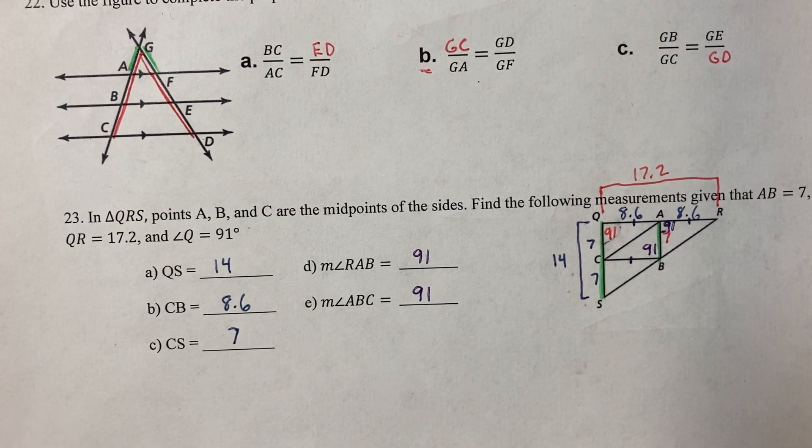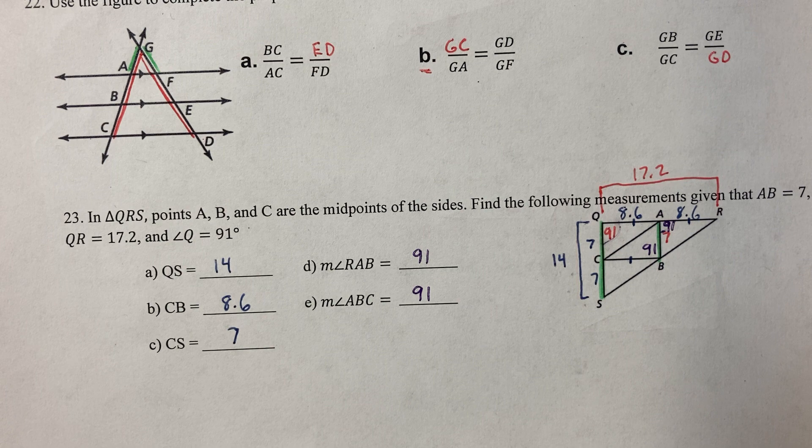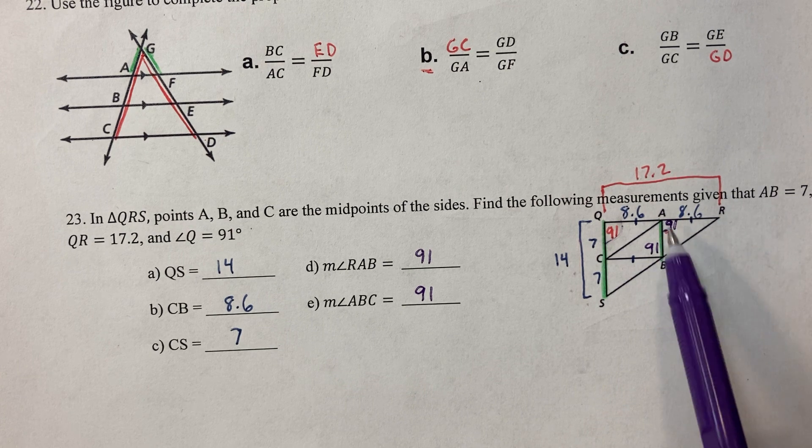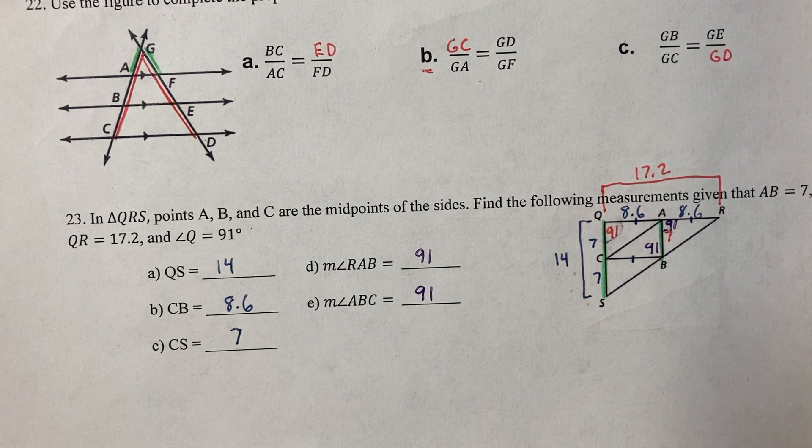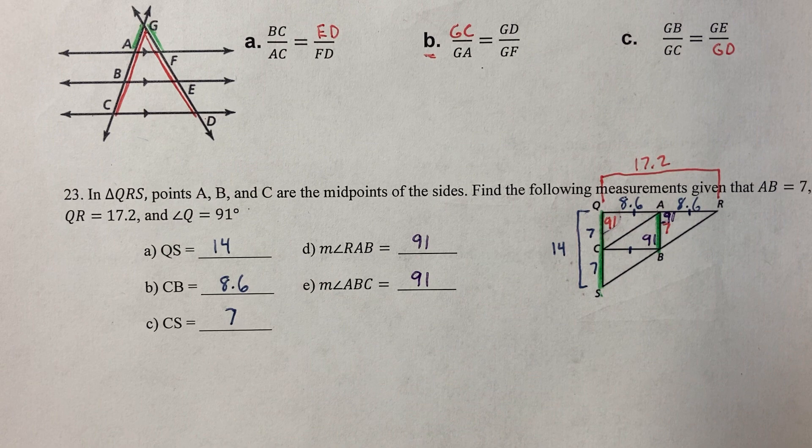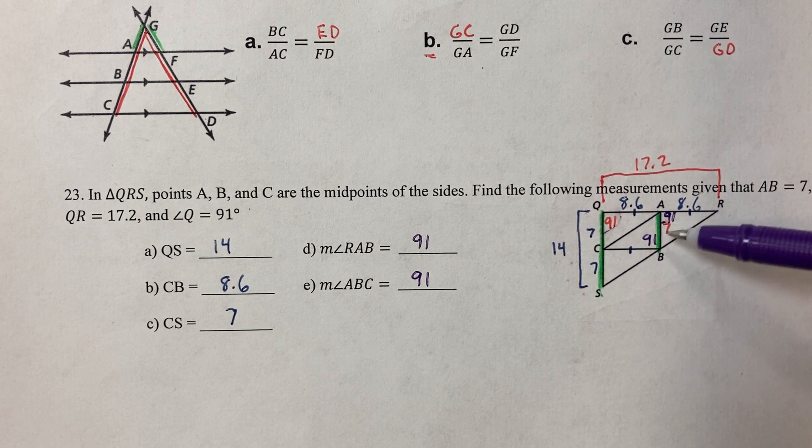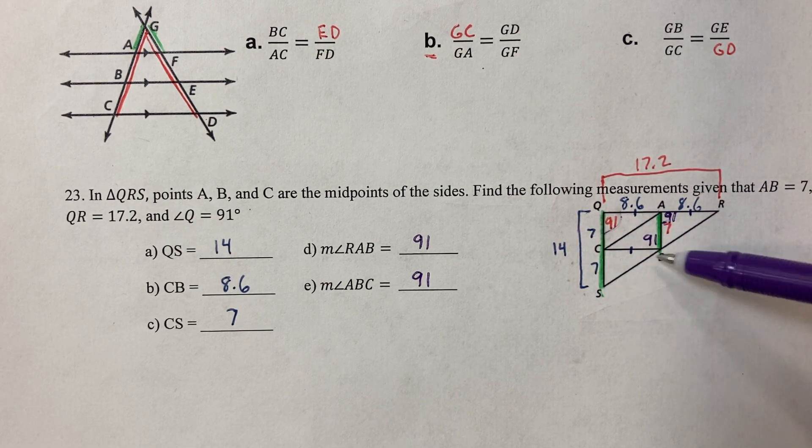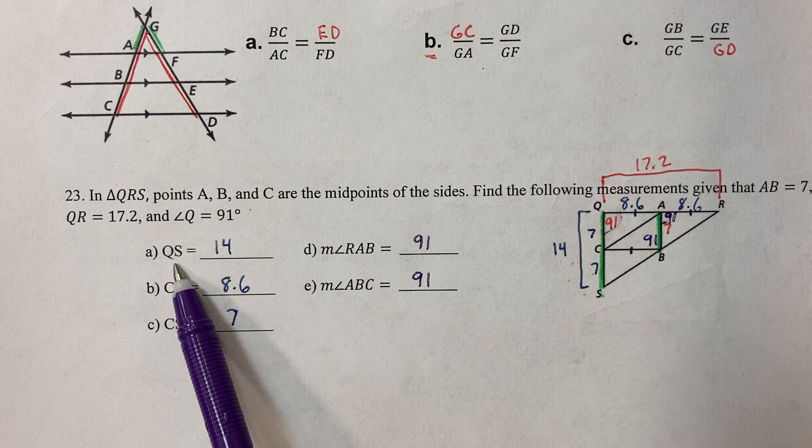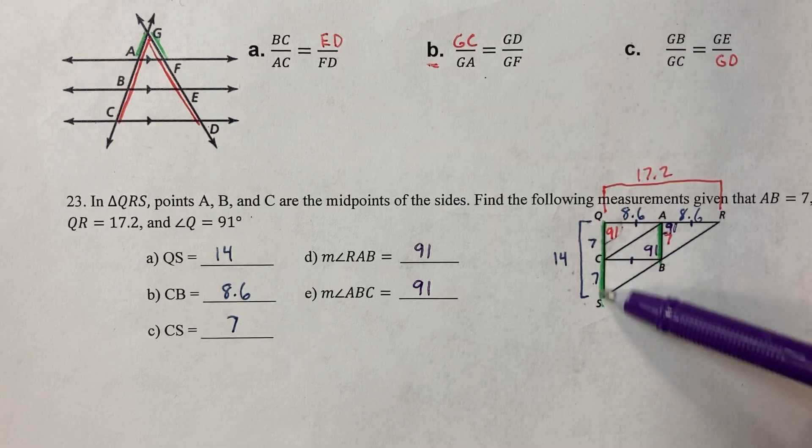23 is one of the most missed problems on this test every year. Let's go through it. I've highlighted everything already. First, we're going to label what we have. We have A to B is 7. Now, A to B, this length here, has a relationship with this length here. This length is half of this whole length. In fact, these are all the same. 7, 7, and 7. Total length of 14. We can go ahead and answer the first one. QS is 14 and CS is 7.